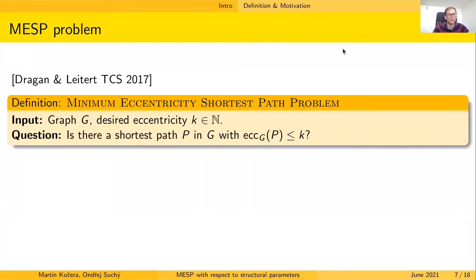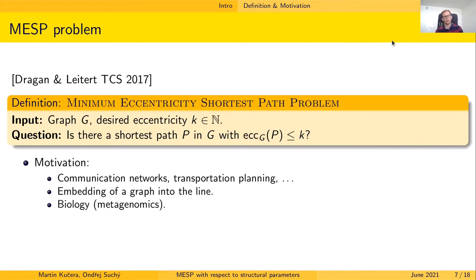We define the Minimum Eccentricity Shortest Path problem as a decision problem. Given a graph G and a desired eccentricity k, the question is: does there exist a shortest path in G between any two vertices such that its eccentricity is at most k?